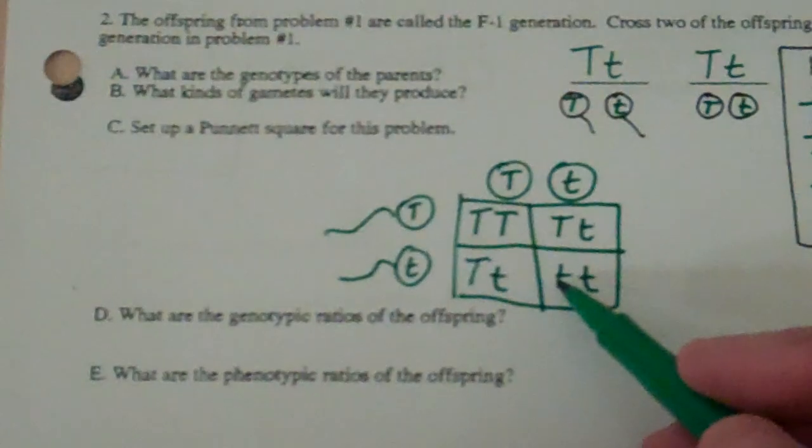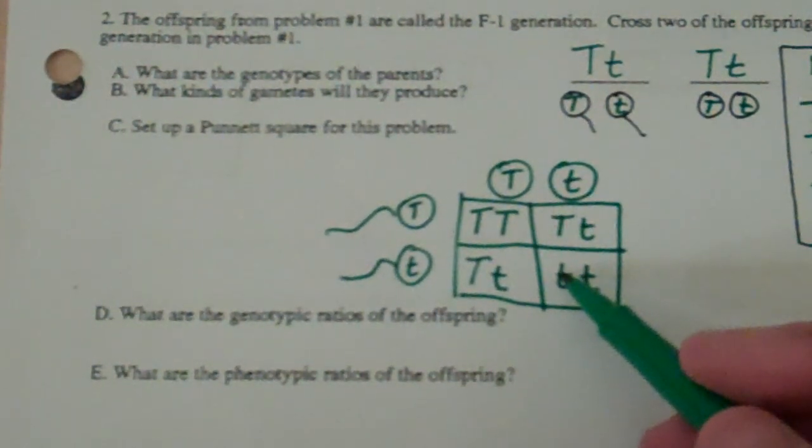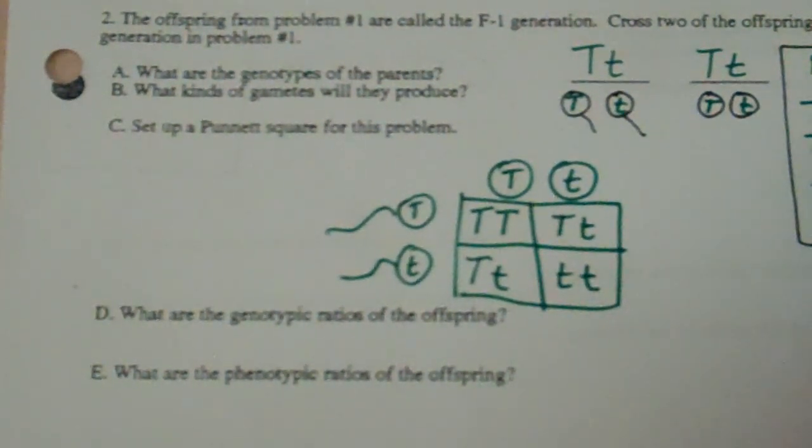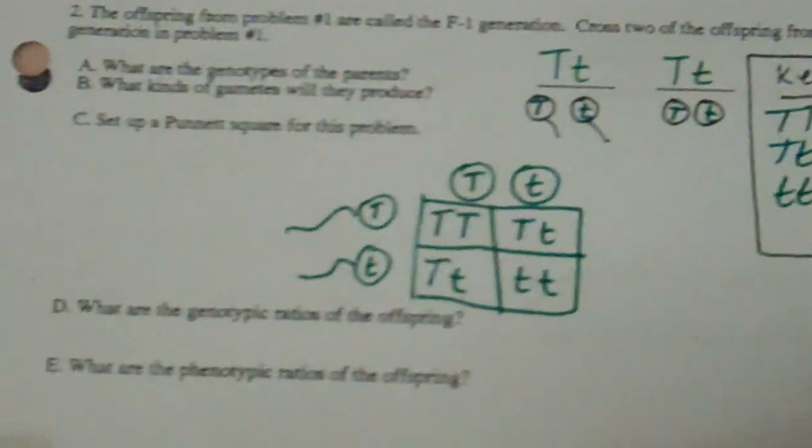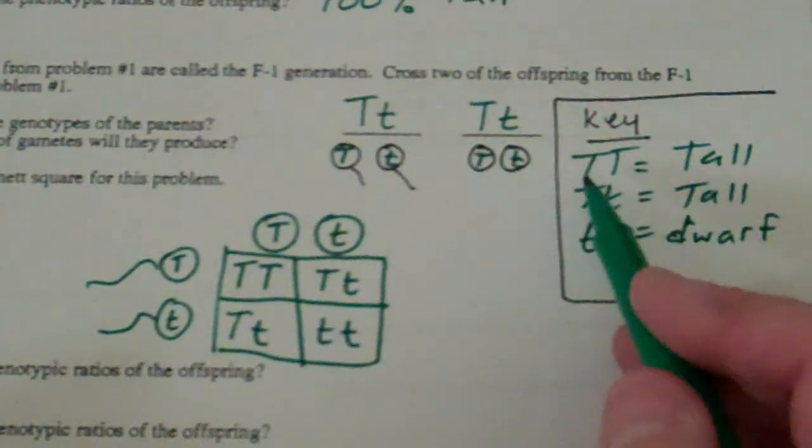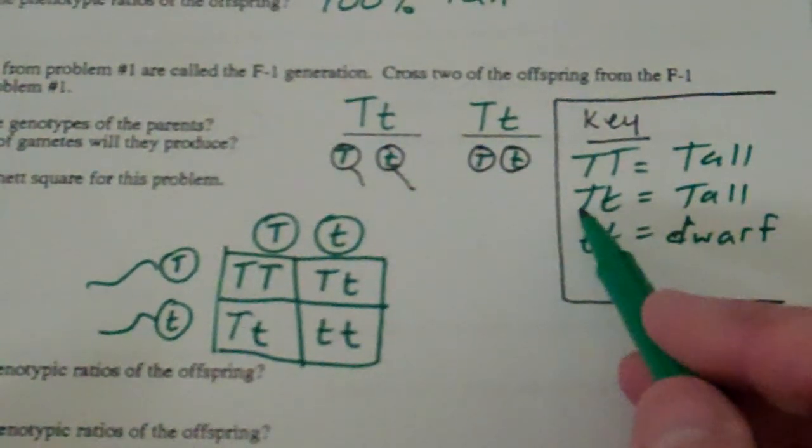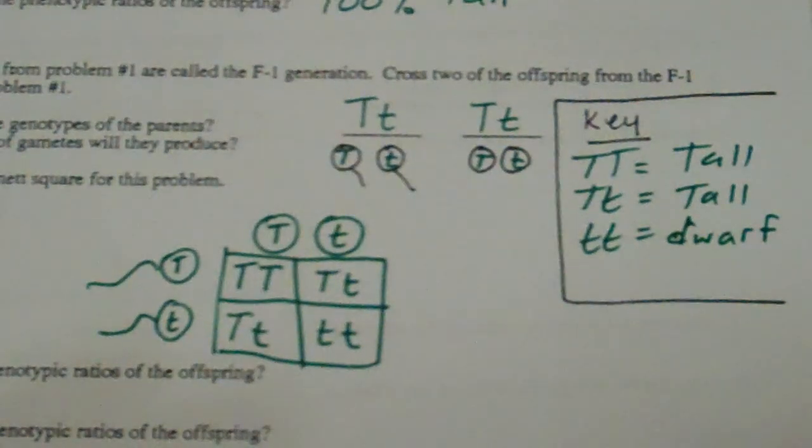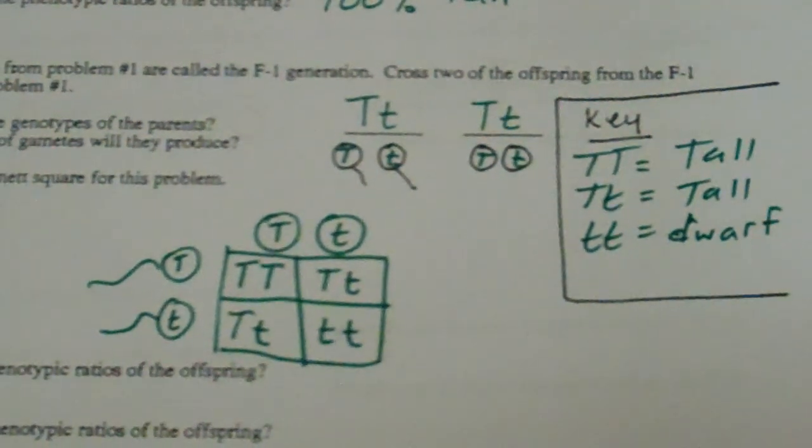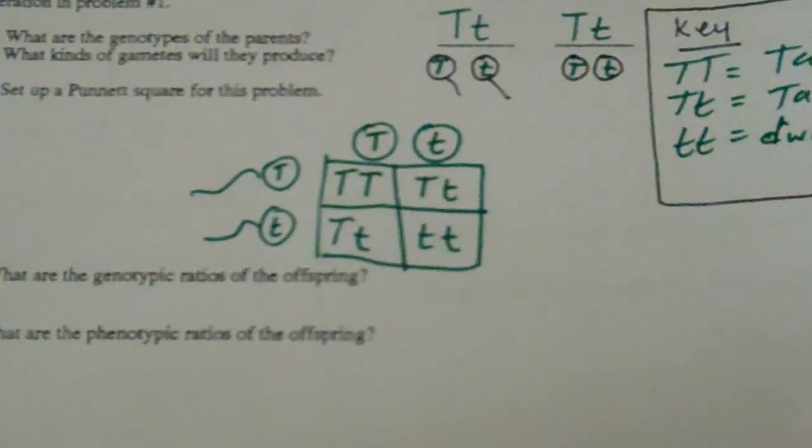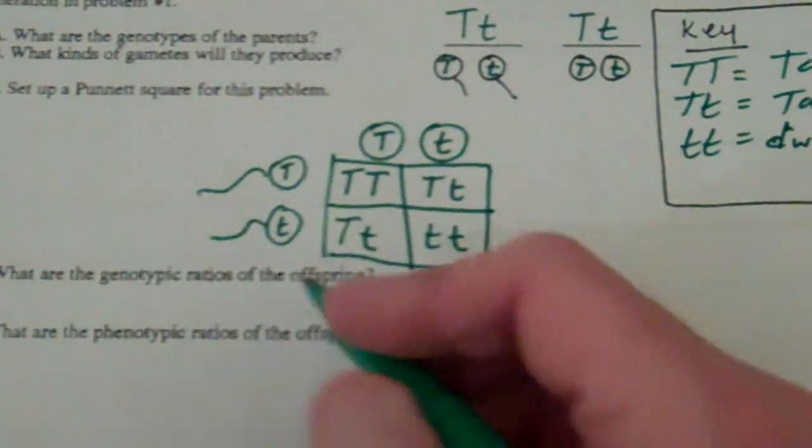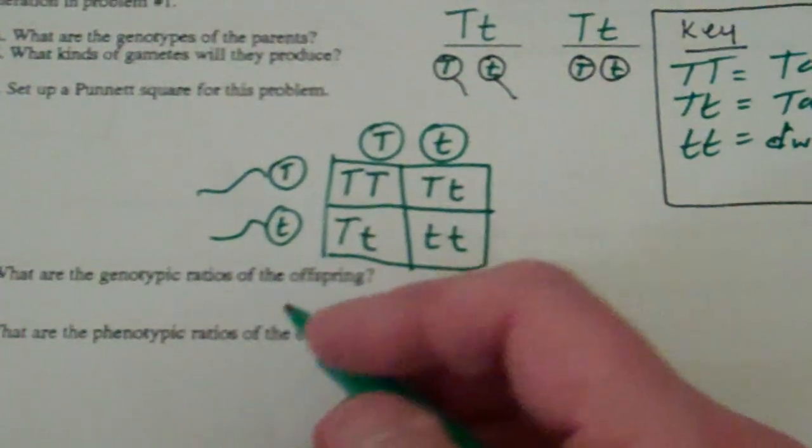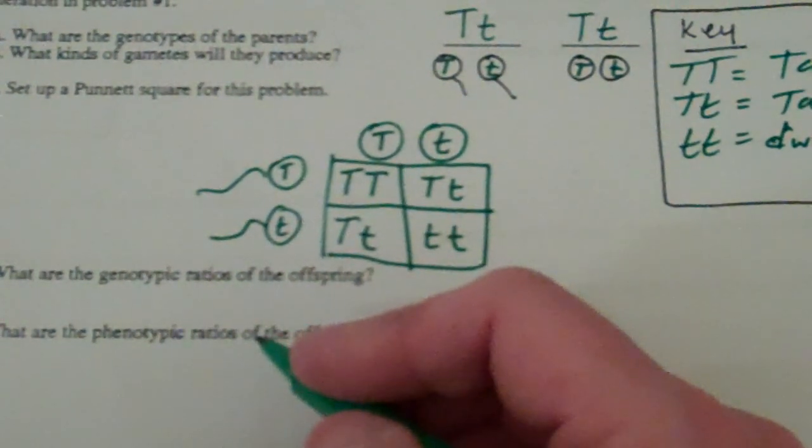I like to put them in that order because you're going to see patterns in genetics if you do that. What do you mean by order? Well, I'm looking at my key and I've got my key listed as homo dominant, hetero, homo recessive. If I keep my ratios in this order, list them in that order if you have them, you're going to see some patterns.